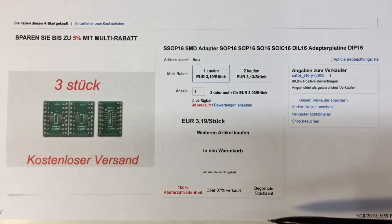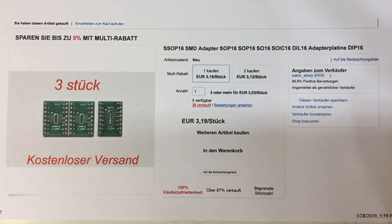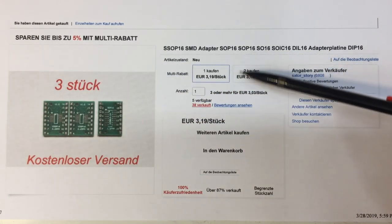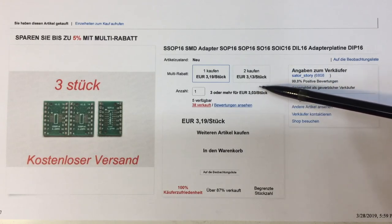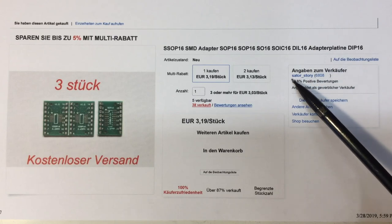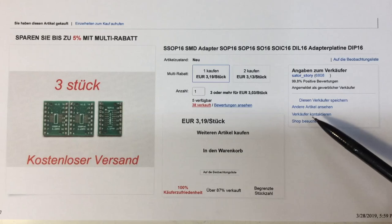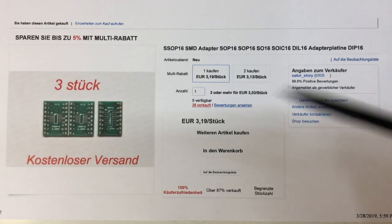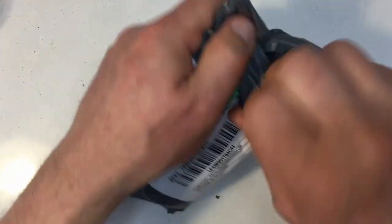Let's have a look at the listing. That was actually from the German eBay, sorry, the German listing. The SSUB-16 or SOB-16 breakout boards: 3.19 euros for three pieces, 3.13 euros for six pieces. It goes down to 3.03 euros for three pieces if you buy three or more. Free shipping in Germany, and it is from Satör Story. I have no idea; maybe it's available internationally, or not.